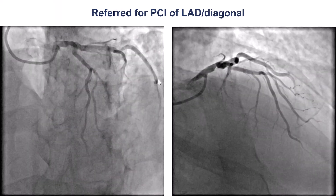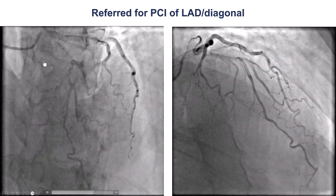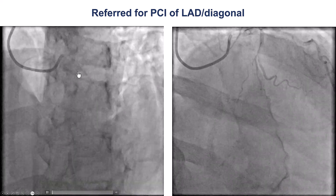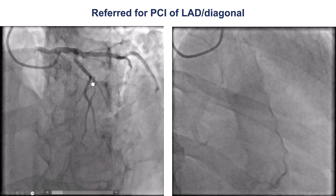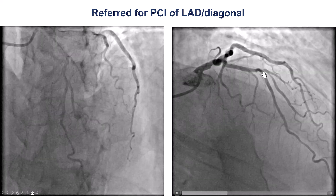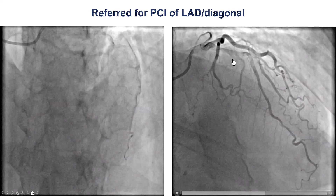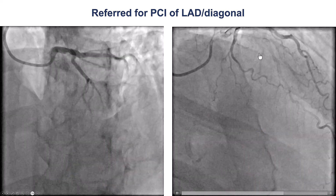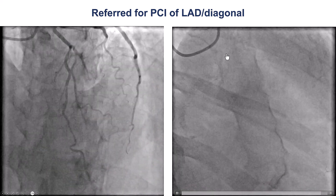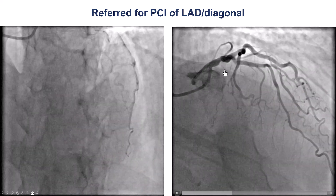The patient presented with unstable angina, and coronary angiography demonstrated a significant lesion in the diagonal. The LAD doesn't look too bad in this view. However, as I will show you, there was a significant lesion by coronary physiology, and there is also some disease in the distal left main.